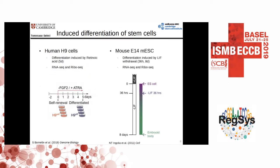We used human pluripotent embryonic stem cells that we induced to differentiate by adding retinoic acid, and this was done in four replicates. The cells were collected either before treatment as self-renewing cells, or five days after treatment as differentiating cells. We did both RNA-seq and ribosome profiling of those cells. In addition, we used published data from the Ingolia lab from mouse embryonic stem cells to validate some of our findings. They used a different differentiation protocol, but the self-renewal state should be similar and the cells exit pluripotency in both cases.